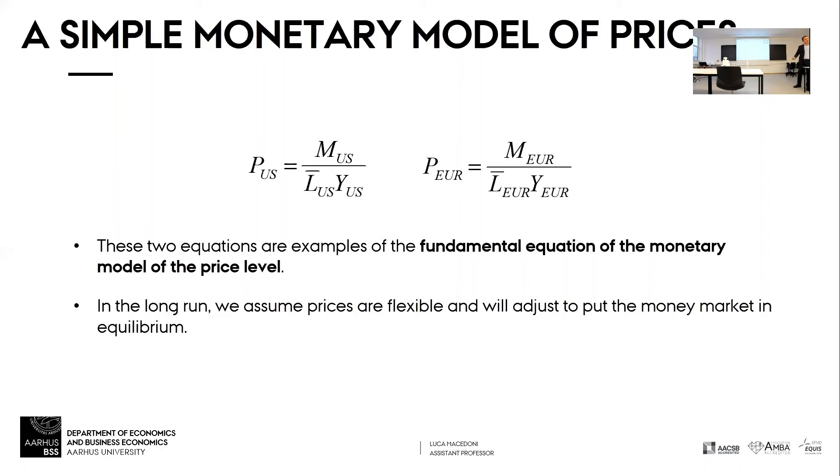Well, if you double the amount of money that people have, and the number of goods that they can buy is the same, logic dictates that prices of goods will just double overnight.